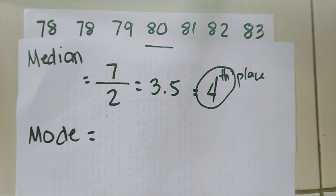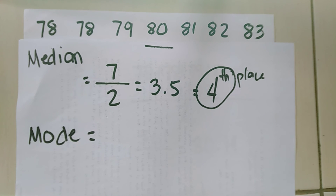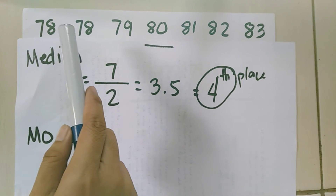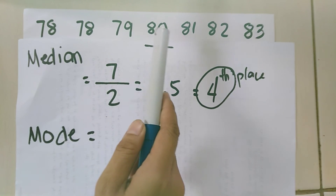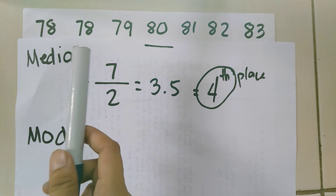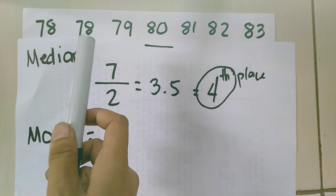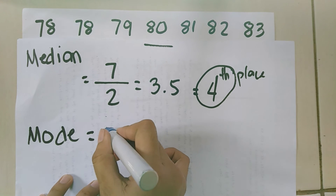Next, let's look at the mode. What is mode? Mode is the most common value in the set — the most frequent data. What is the most common value in our set? We have 78 appearing twice. No other numbers repeat, so therefore our mode is 78.